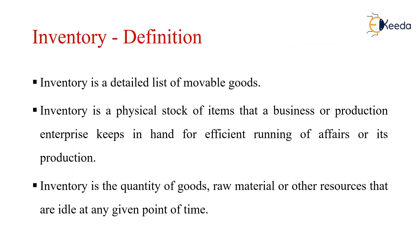So what is inventory? There are different definitions of inventory. Inventory is a detailed list of movable goods. Inventory is a physical stock of items that a business or production enterprise keeps on hand for efficient running of its affairs or production. Inventory is the quantity of goods, raw material, or other resources that are idle at any given point of time. So we can say that inventory is a physical stock of items which people keep on hand for proper working of the products or services.